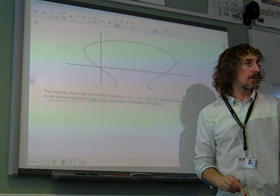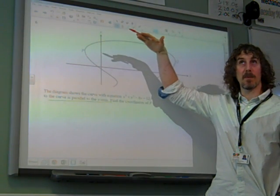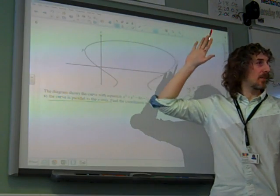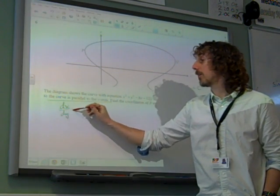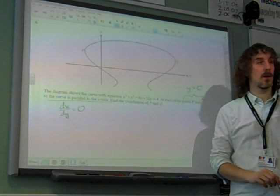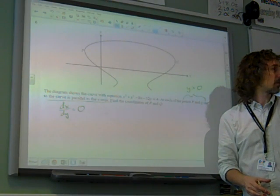Remember what that means. If it's parallel to the x-axis, it's when dy/dx is 0. If it's parallel to the y-axis, that means dx/dy is 0. So our aim is going to be to find where dx/dy is 0.